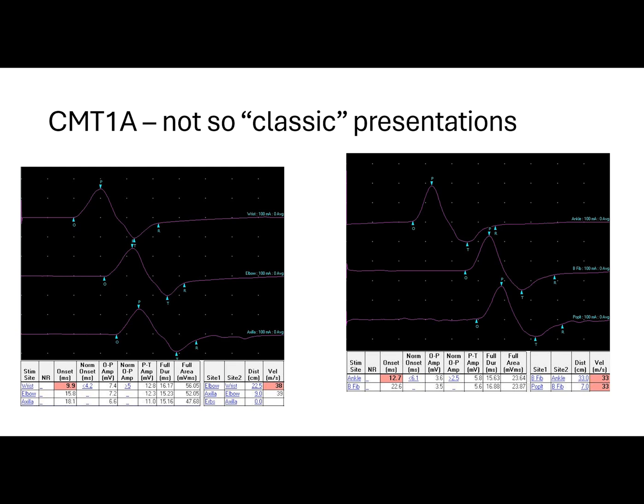The right side picture is from a fibular motor nerve conduction study of the same patient, with prolonged distal latencies, preserved amplitudes at 3.6 millivolts, and reduced conduction velocities around 33 meters per second. In both upper and lower limbs, we can observe a uniform slowing of nerve conduction velocities.